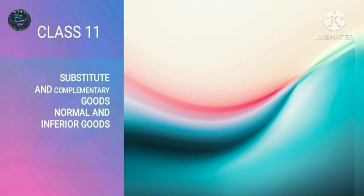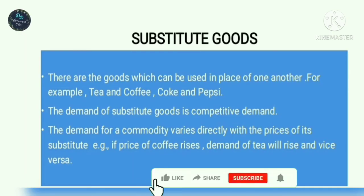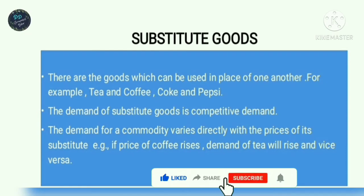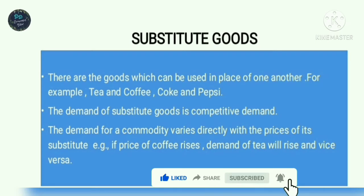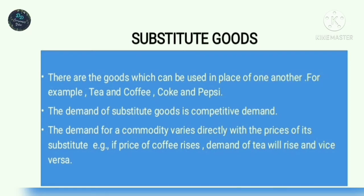Substitute goods are those goods which can be used in place of one another. In the case of such goods, a change in price of one good will positively change the demand for another good. For example, if the price of tea increases, the demand for tea will fall but the demand for coffee will increase.